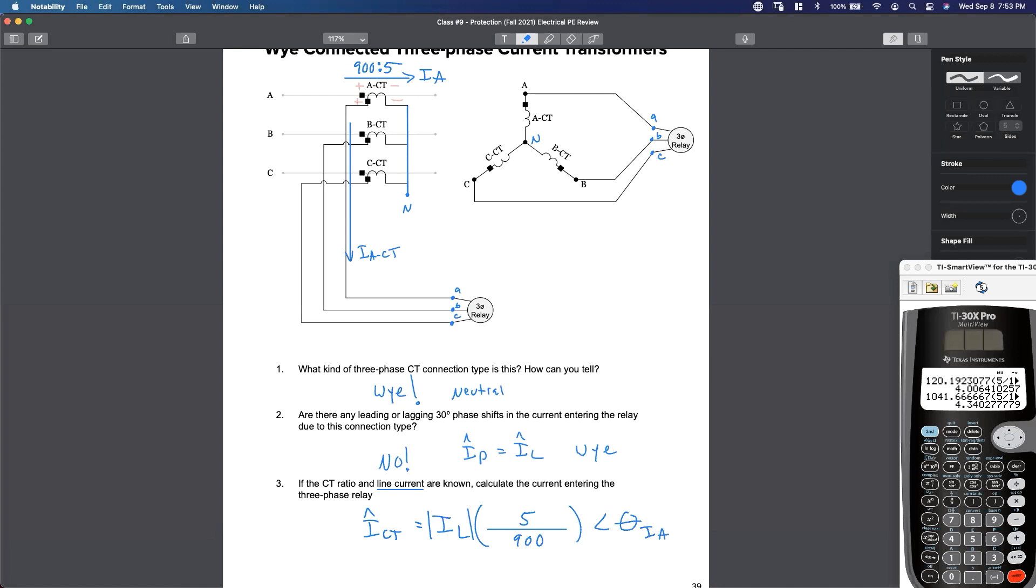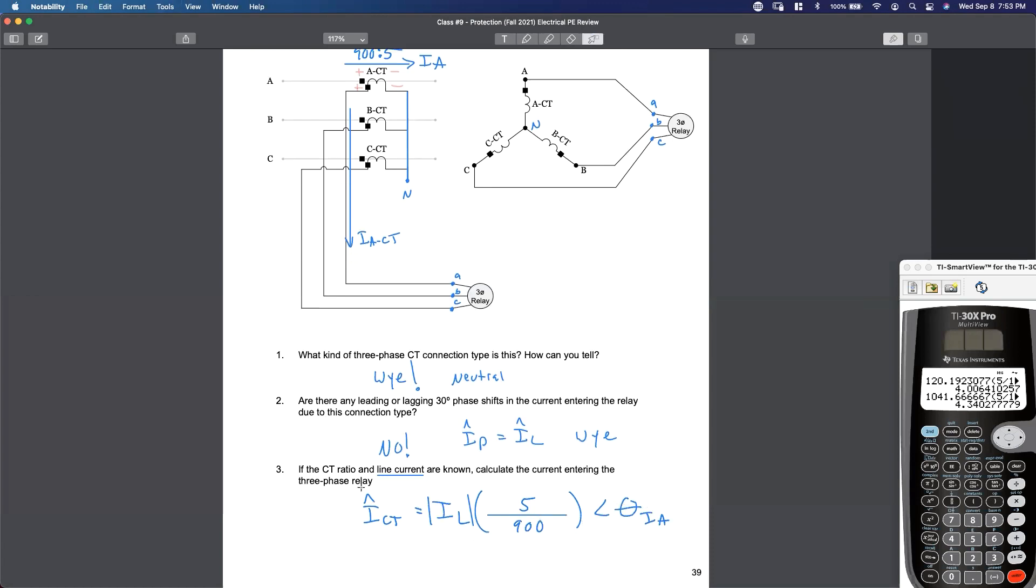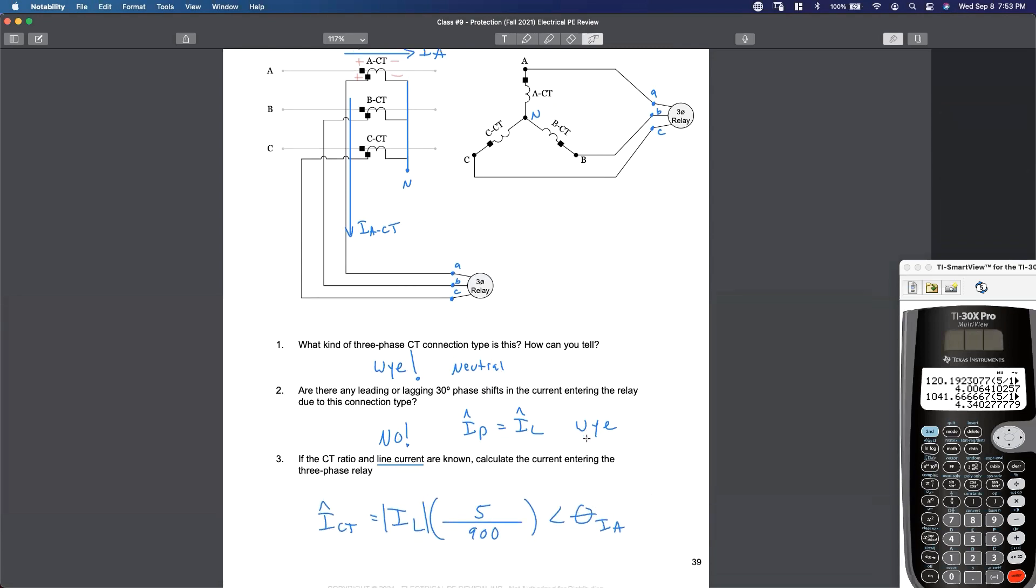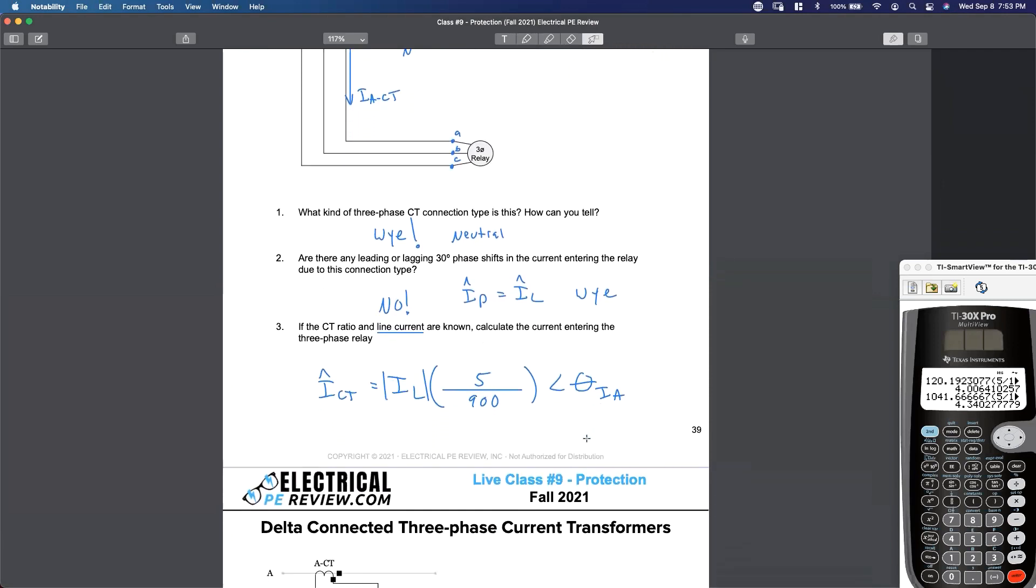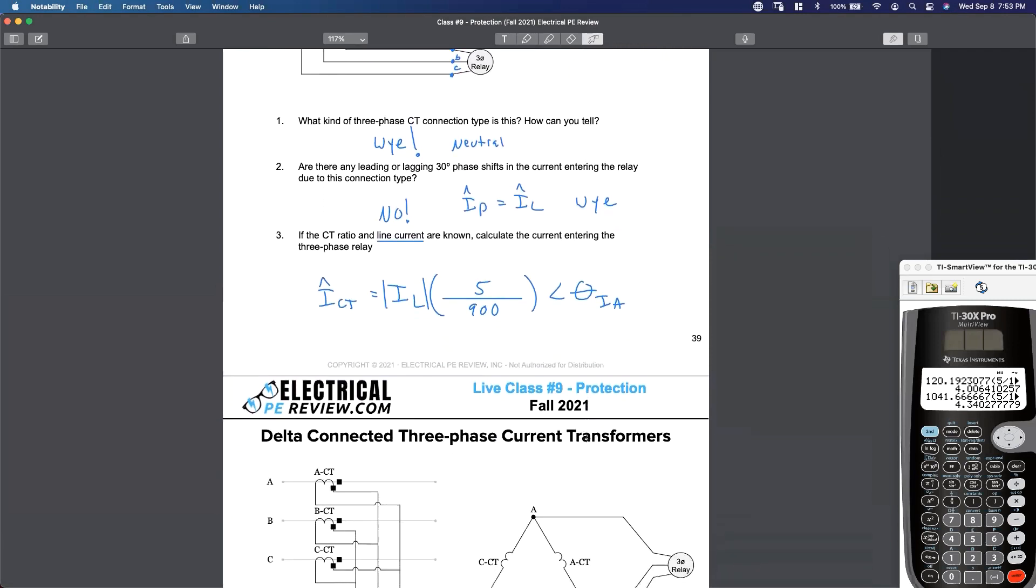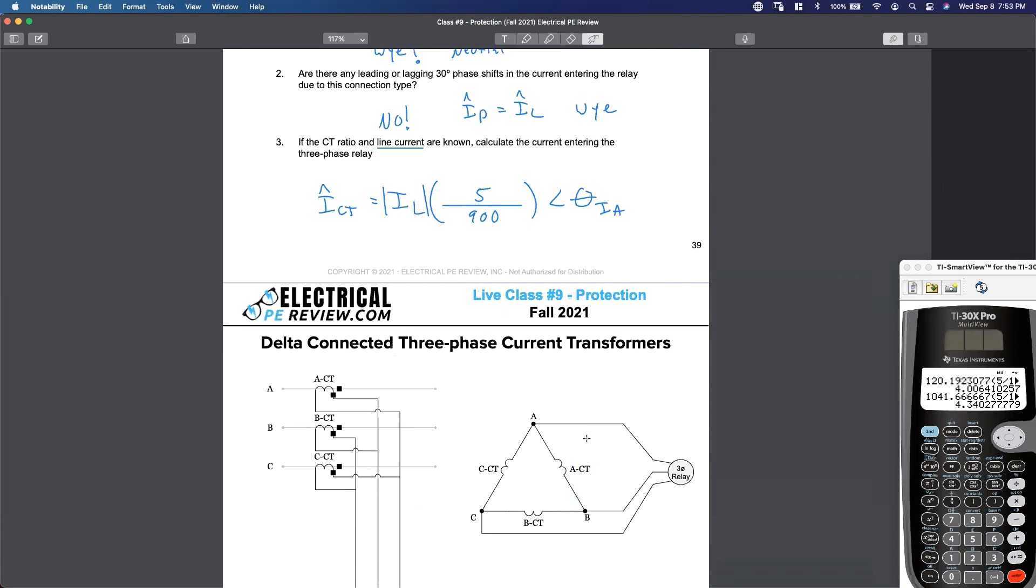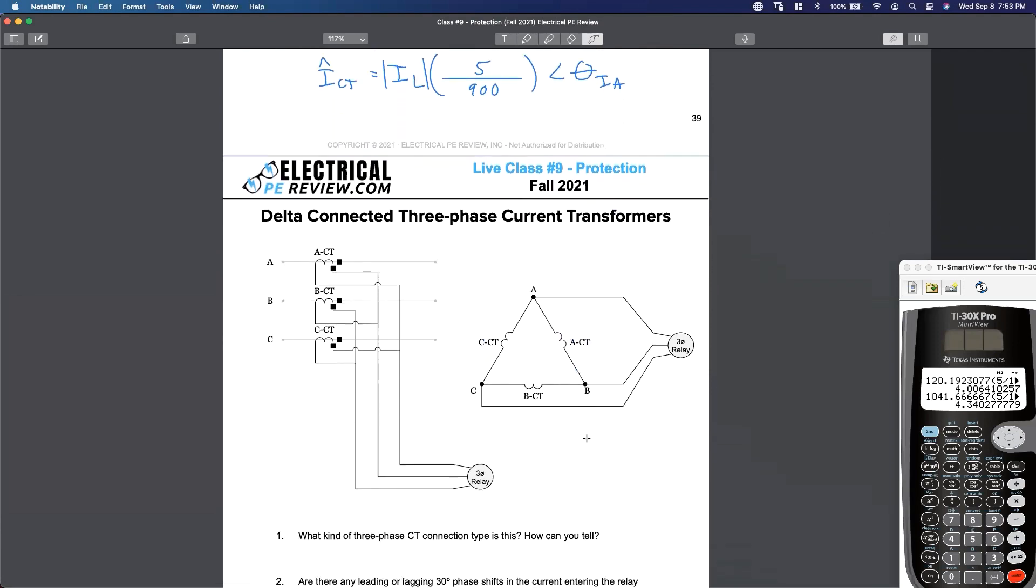But there's no change to the angle. See that? You guys like that? No change to the angle. Make sense? Really easy to comprehend with the Y. What do you guys think happens with the delta connection? Is there a phase shift with delta phase currents and delta line currents? See where I'm going with this? Not just a phase shift. Has anything happened to the magnitude?